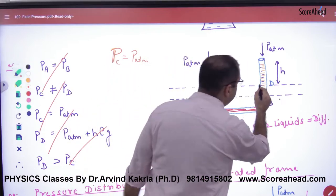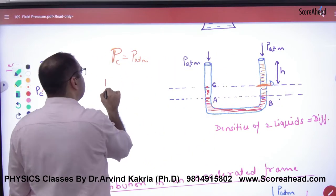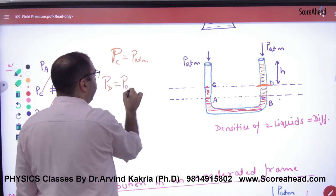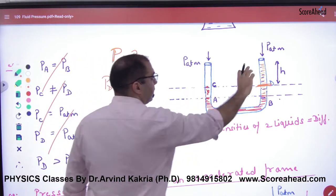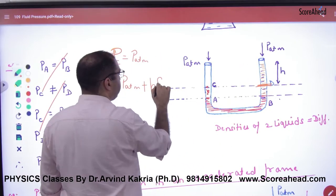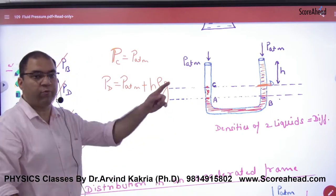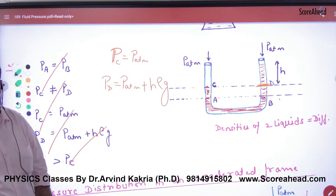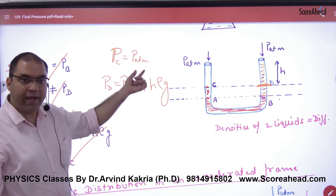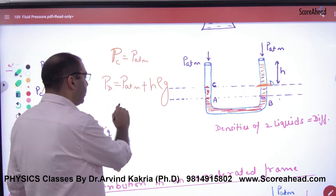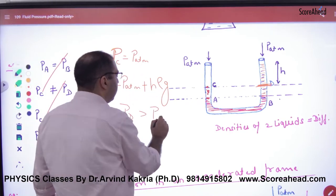If I ask what is the pressure at point D, then D point pressure will be equal to P atmospheric plus - what is the height? H into density into g. Tell me, is D point pressure greater or C point pressure greater? D is greater, because both have atmospheric pressure and this additional term, so D point pressure is greater than C point pressure.